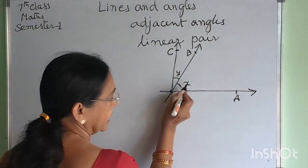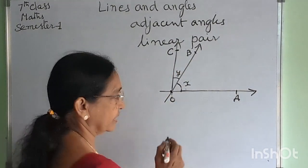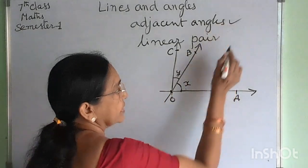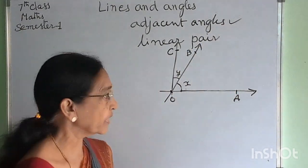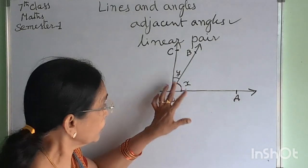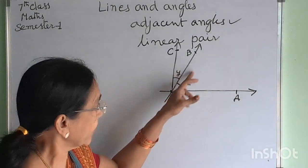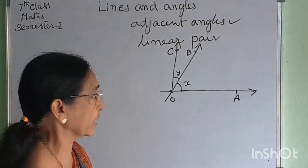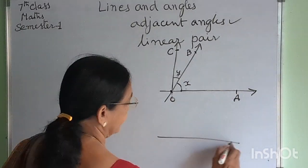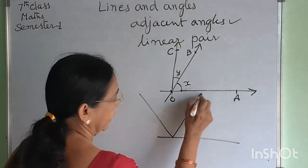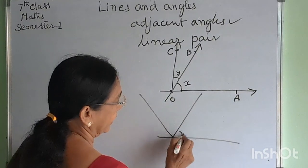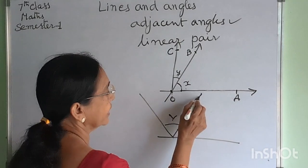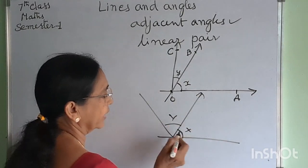These two angles are adjacent to each other. Angle X and angle Y are called adjacent angles. For two adjacent angles, there must be a common ray — a common line between the two angles. Therefore, X and Y are adjacent angles, and this ray is common to both the angles.